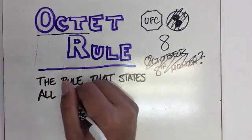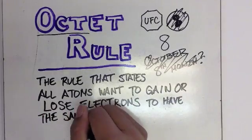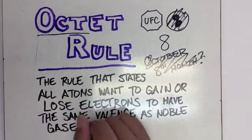So the octet rule. It's basically the rule that states that all atoms will want to gain or lose electrons to have the same valence as noble gases.